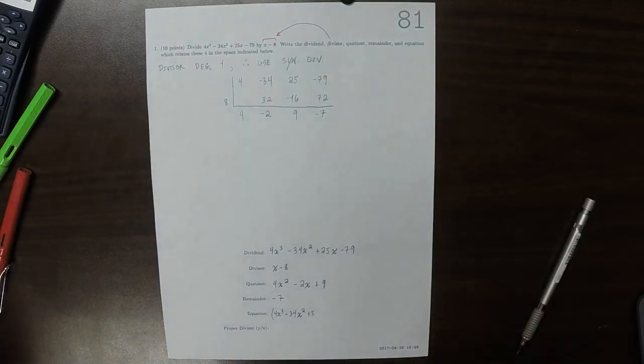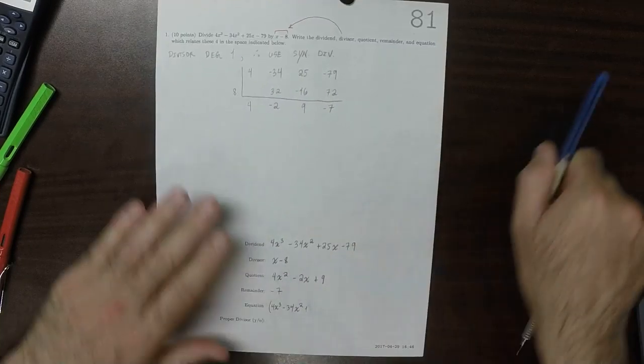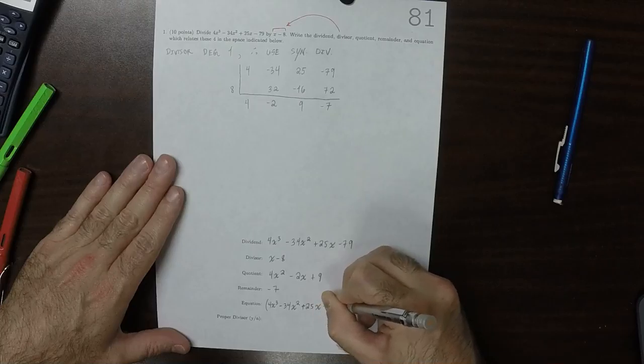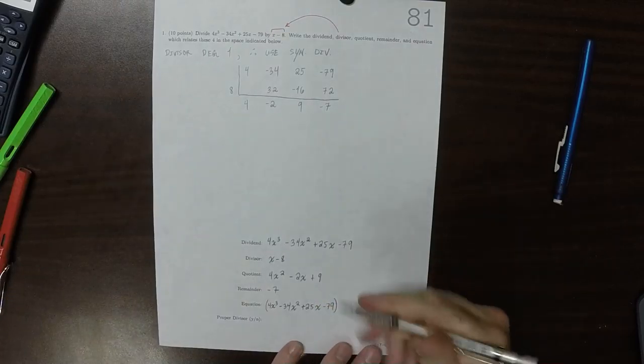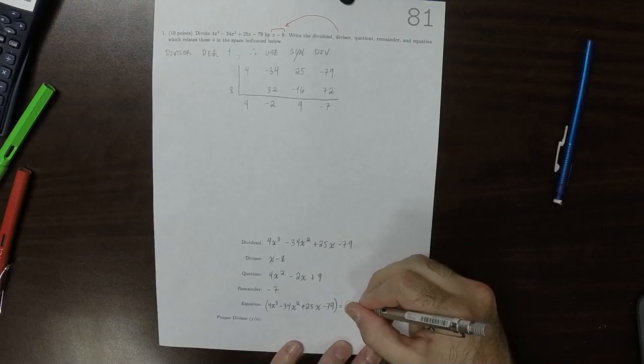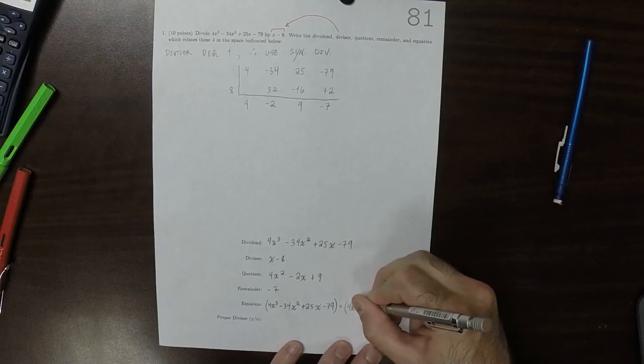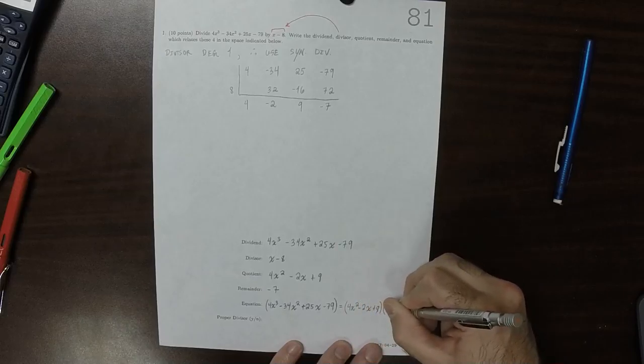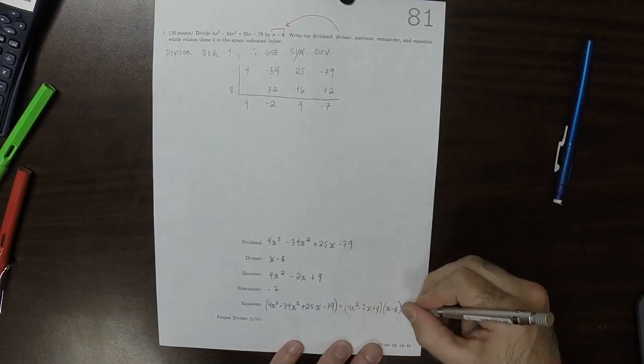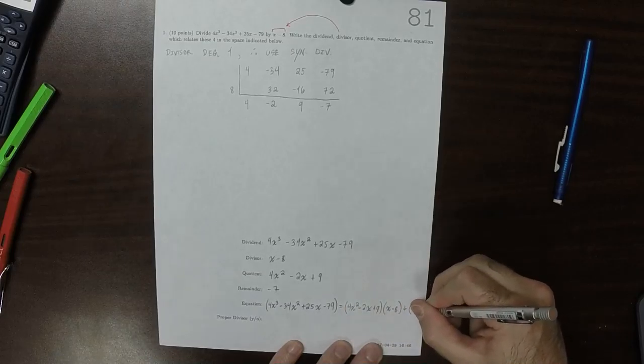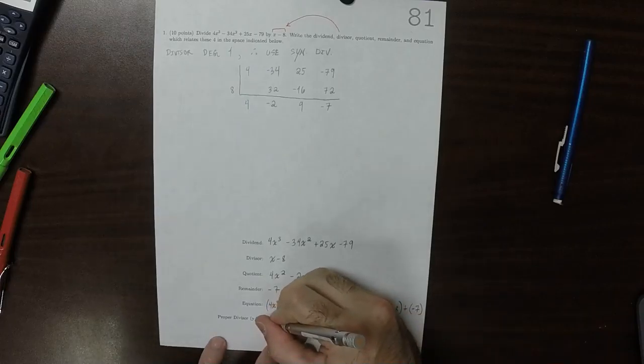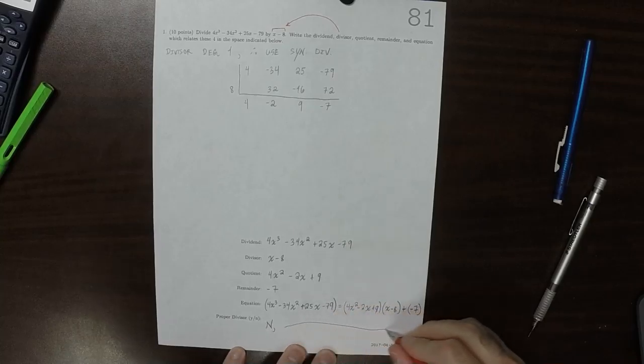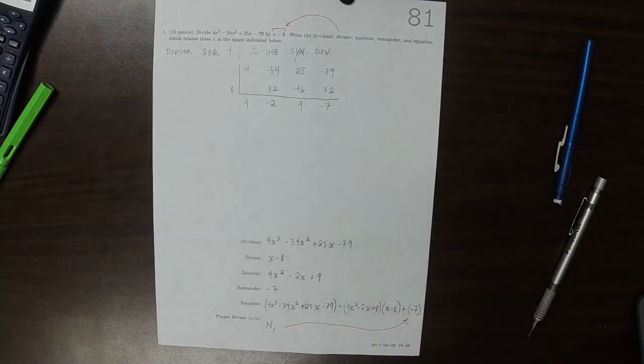The equation which relates all of those is 4x cubed, minus 34x squared, plus 25x minus 79, is equal to 4x squared, minus 2x, plus 9, times the divisor, plus the remainder.